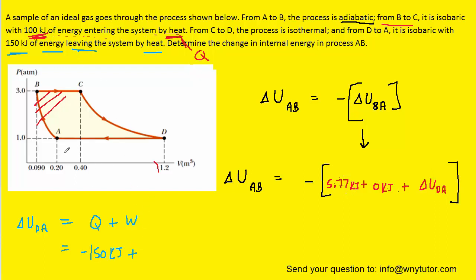And then for the work, we just have to find the area under the curve when moving from D to A, which is going to be another rectangle. Notice that in this case, the volume is shrinking. It's going from 1.2 down to 0.2. And whenever the volume is decreasing, we say that the work done on the gas is positive. So we're going to leave that a positive sign.